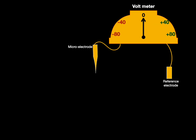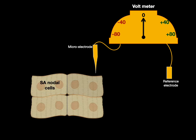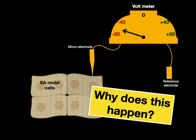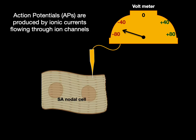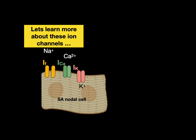Here's a voltmeter with a microelectrode and a reference electrode — this is what measures the voltage difference between the inside and outside of a cell. Here are some SA nodal cells and we put the microelectrode inside. The voltmeter moves from negative 60 to negative 40 millivolts and then shoots to positive 20 millivolts. It keeps cycling through this. Action potentials are produced by ionic currents flowing through ion channels — sodium and calcium on the outside, potassium on the inside. The ions and channels help us understand the changes in voltage during action potentials.